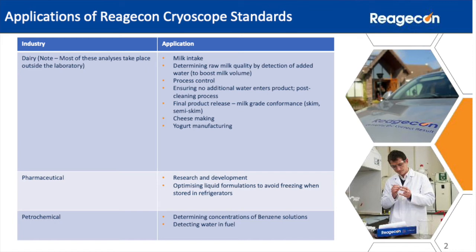Milk, in its unadulterated state, has a freezing point below zero degrees C. As milk is diluted with water, the freezing point moves closer to that of pure water, which is zero degrees C. This elevation of freezing temperature due to the addition of water is caused by the reduction in concentration of lactose and inorganic salts.